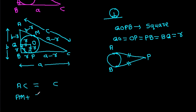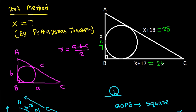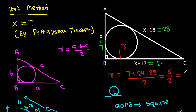AC = AM + CM = c. So (b − R) + (a − R) = c, giving a + b − 2R = c, and therefore R = (a + b − c) / 2. Applying this: R = (7 + 24 − 25) / 2 = 6 / 2 = 3.